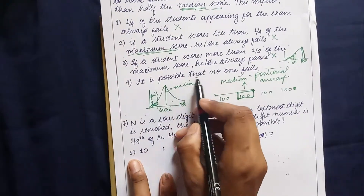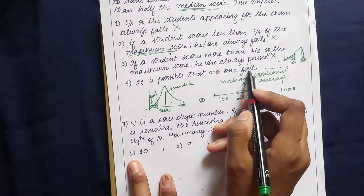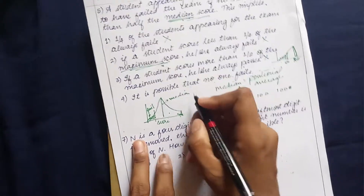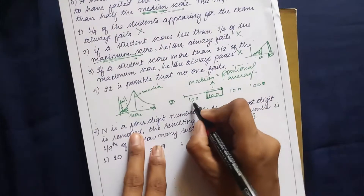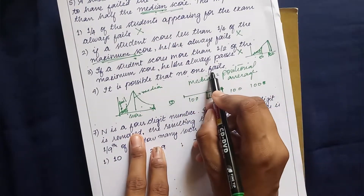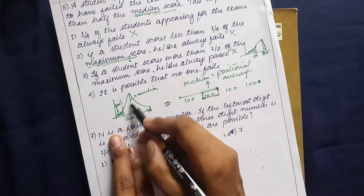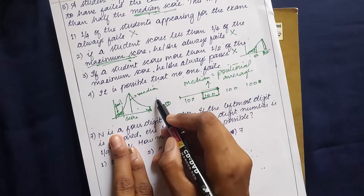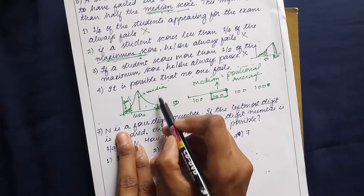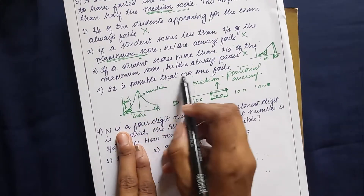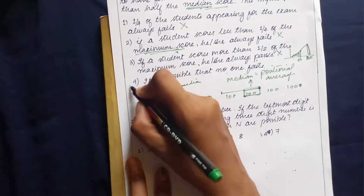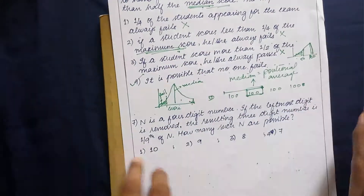It is possible that no one fails — when everybody scores 100, no one falls below half the median score in spite of the failing region existing. So it is possible that no one fails. Option four is the correct option.